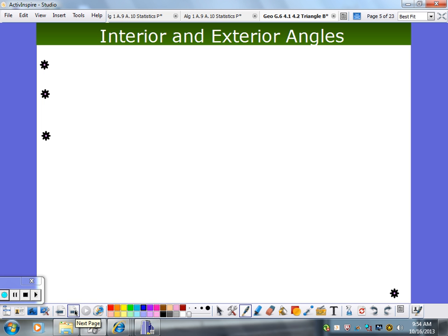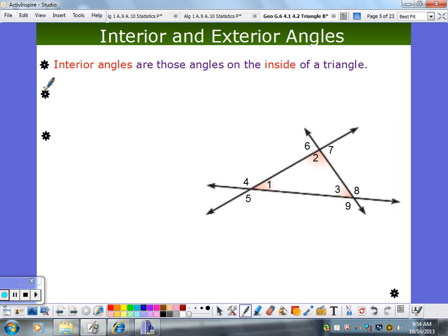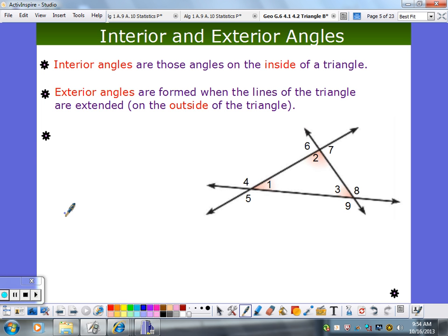Interior and exterior angles. Interior angles. Guess where they are? Inside the triangle. Right? Exterior angles are outside the triangle. It's like you extend up an edge. And you've got an angle. Let's call them exterior angles.